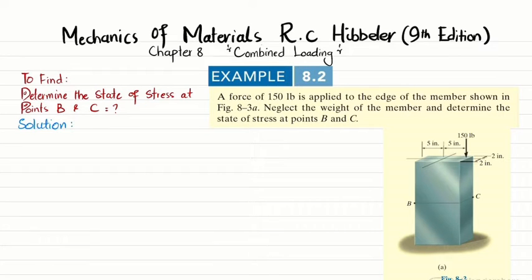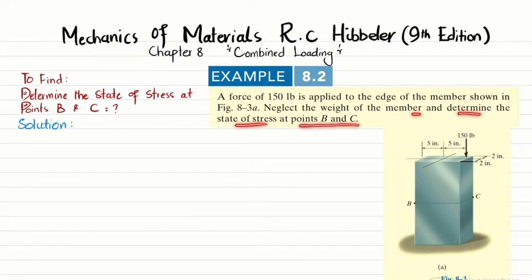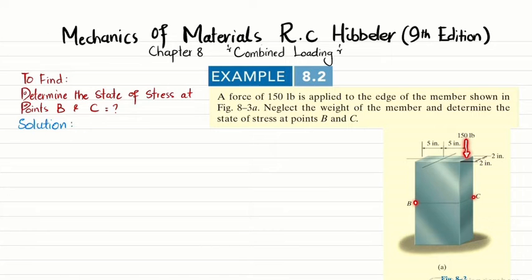Welcome back. In this video we are going to solve example 8.2 taken from chapter 8, combined loading, from the book Mechanics of Materials by R.C. Hibbeler, 9th edition. The problem states that a force of 100 pounds is applied to the edge of the member shown in figure 8.3a. Neglect the weight of the member and determine the state of stress at points B and C.